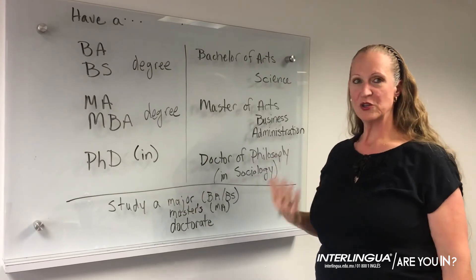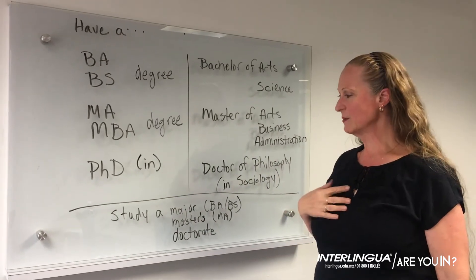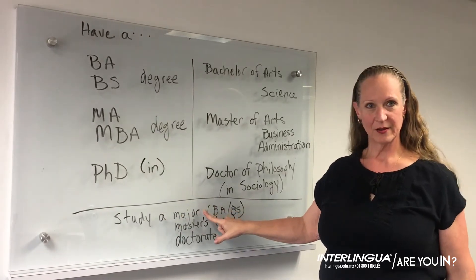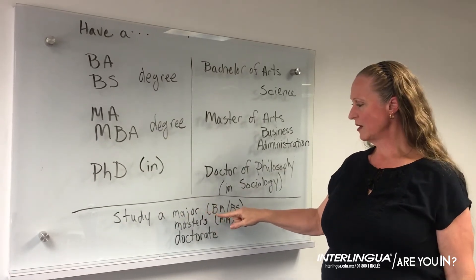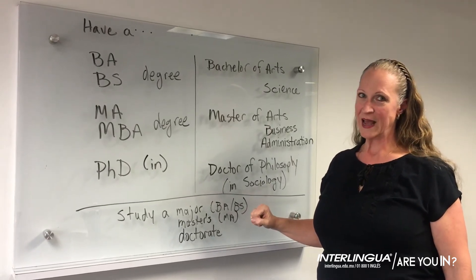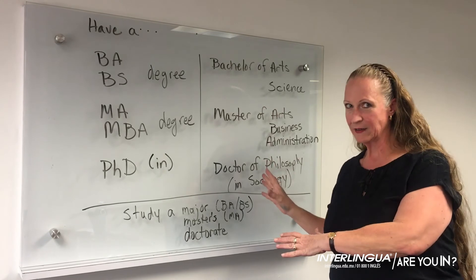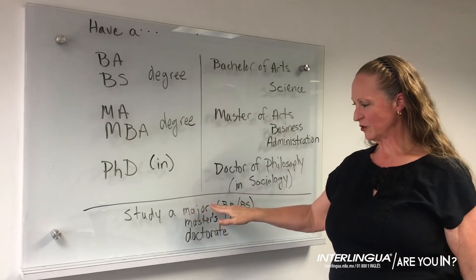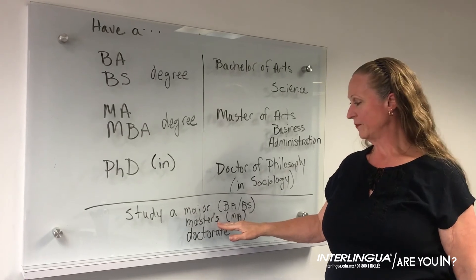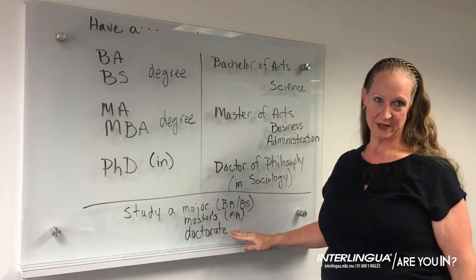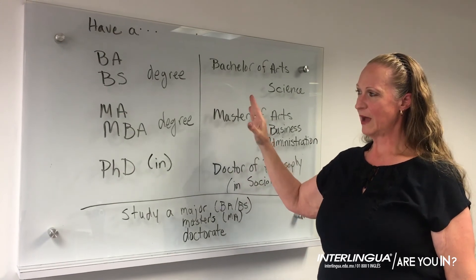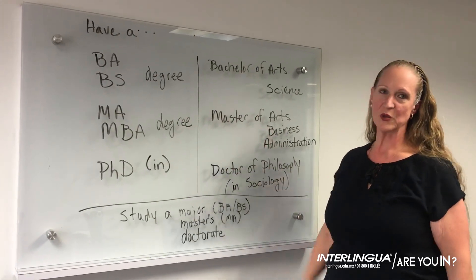Also, when you want to talk about what you're studying, you say I am studying, or I study a major. When you study a major, you're talking about a BA, maybe a BS. You don't say I have a career — that's when you're working. You say you have a major, or you can study a Master's degree, or you can study a doctorate. So these are some of the acronyms we use and these are some of the ways we use them.